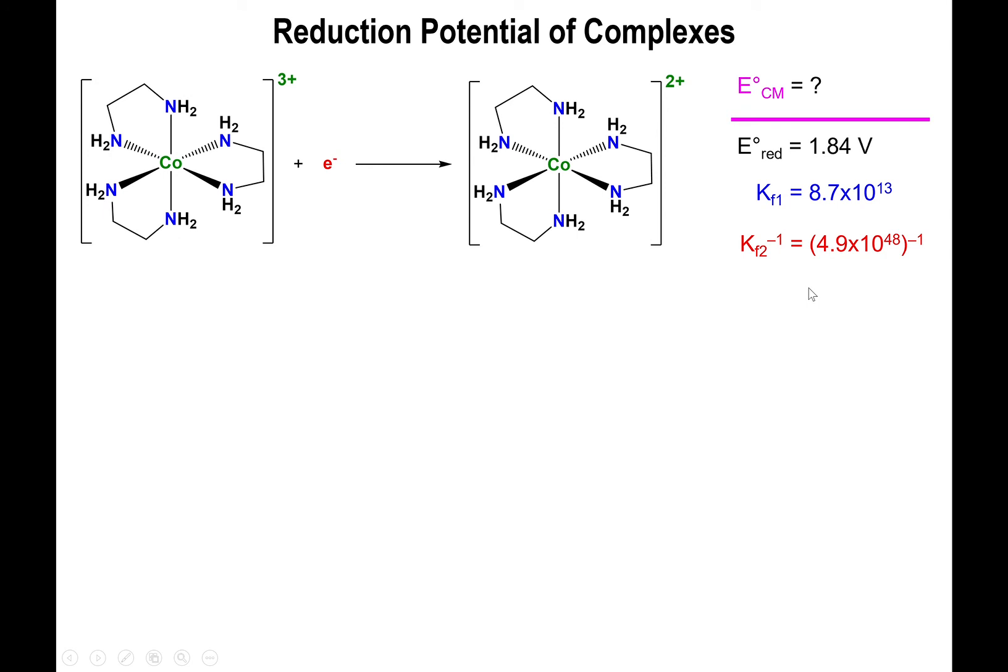Now, in terms of the process, you have the reduction potential of cobalt 3+ to cobalt 2+. You have the formation constant of the cobalt 2+ complex. And you have the reverse of the conversion or the formation of the cobalt 3+ complex. So all you have to do now is simply adapt these values together. And for the equilibrium constants, you're going to use the relationship between the potential and the equilibrium constant.